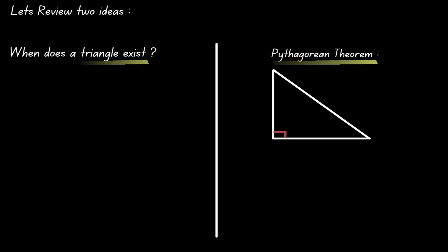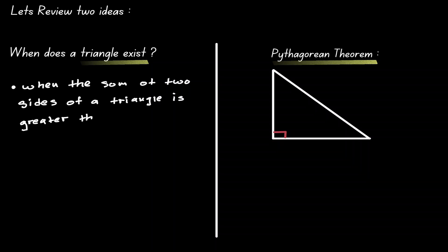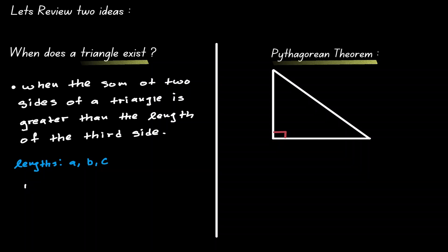A triangle exists when the sum of any two sides of a triangle is greater than the third side. So if we have a triangle with sides A, B, and C, then A plus B must be greater than C, A plus C must be greater than B, and B plus C must be greater than A. If none of these three conditions are true, then we do not have a triangle.